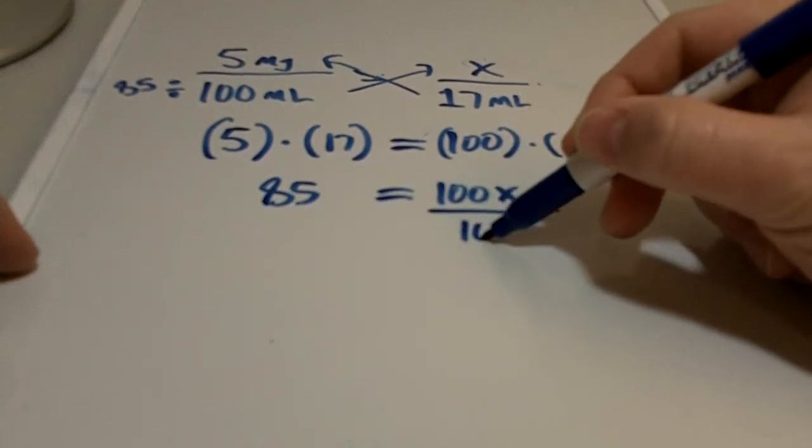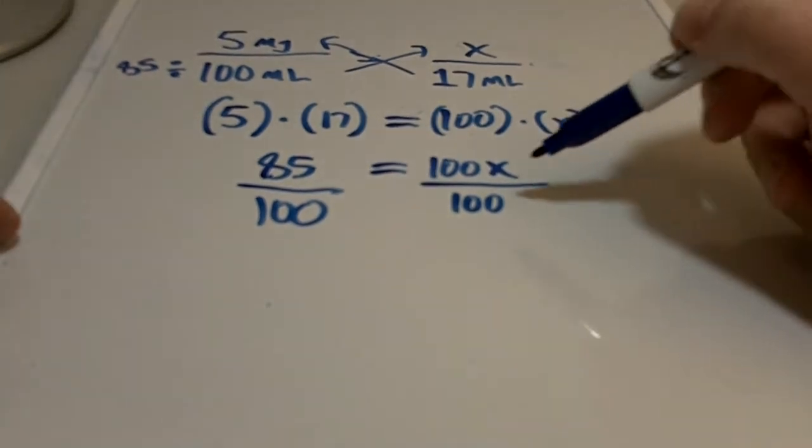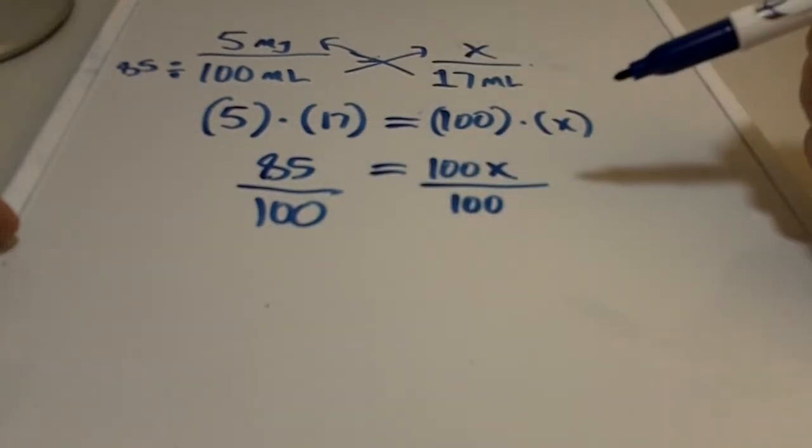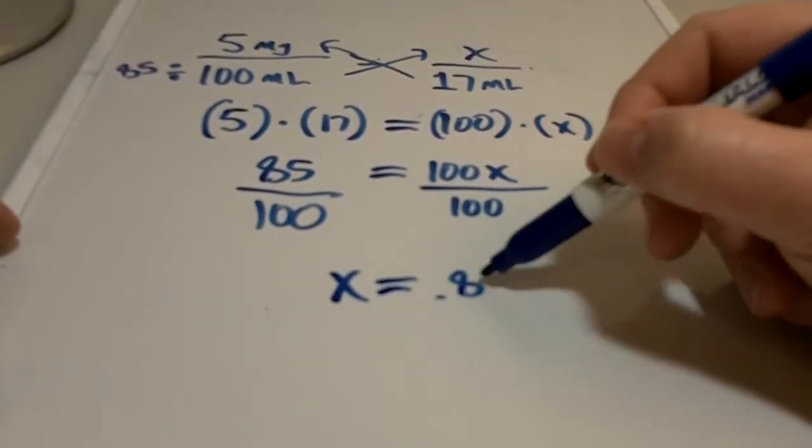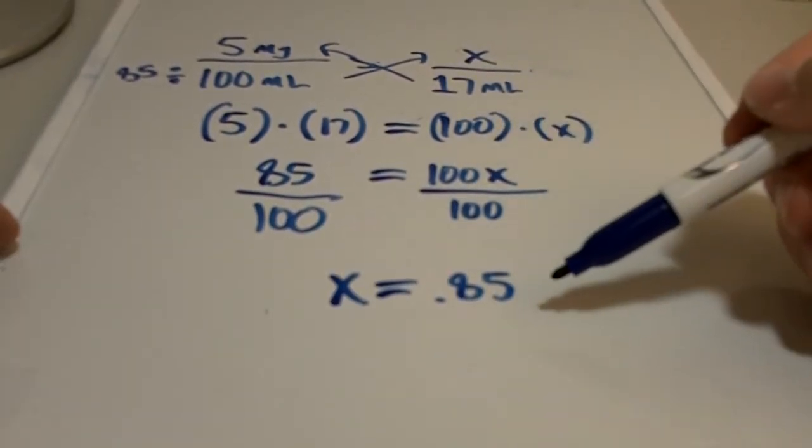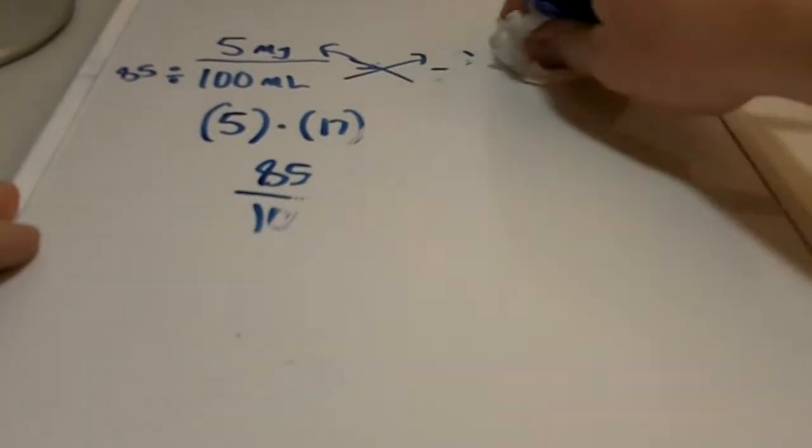And the reason you can do that is you can do anything to an equation as long as you do it to both sides. So anyway, you get x equals 0.85, which was the same answer we got up here. This is just the longer way to do it. But it's actually a good idea to learn how to do the algebra way, because you're not always going to have such a simple task on a math problem.